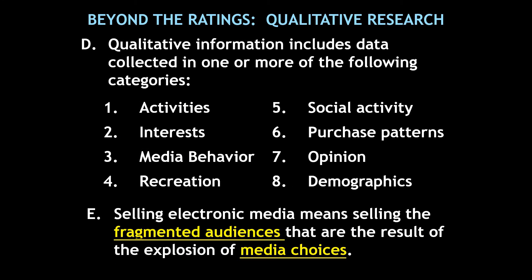Qualitative information includes data collected in one or more of the following categories: activities, interests, media behavior, recreation, social activity, purchase patterns, opinion, and demographics. All of these things factor into making the best decision as an advertiser as to where you want to spend your advertising dollars, because you want to reach the audience where it is and make sure that your audience and the audience of the media outlet match. Selling electronic media means selling the fragmented audiences that are the result of the explosion of media choices.